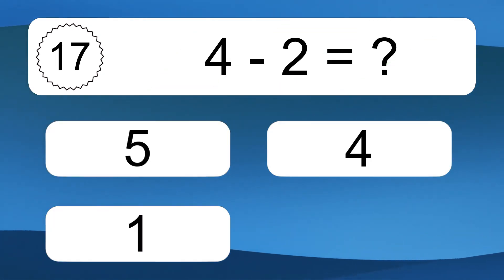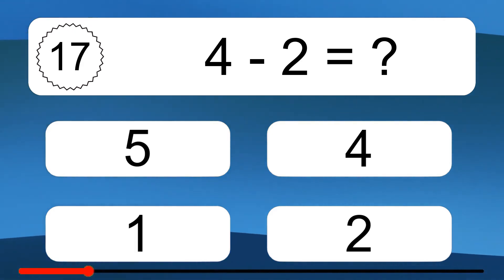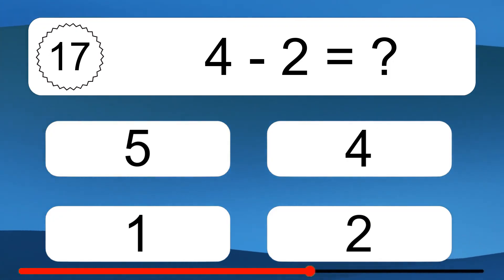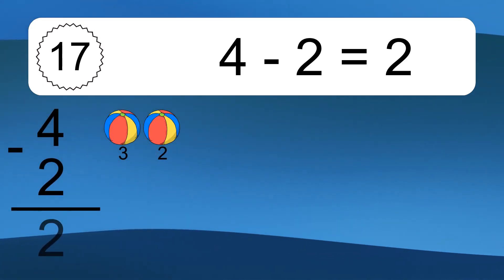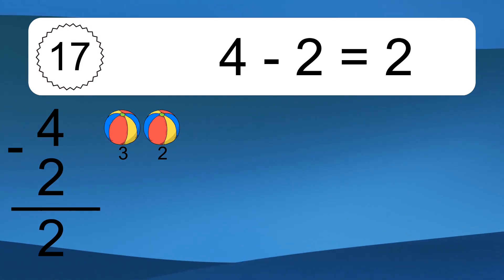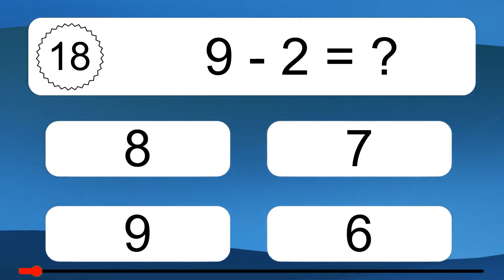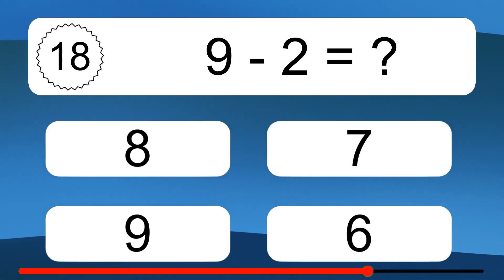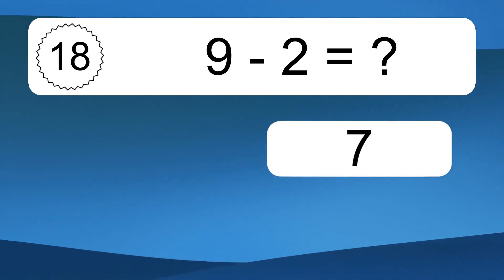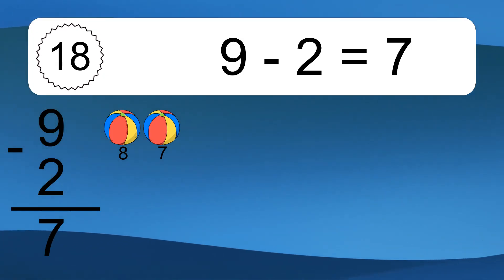4 minus 2 equals what? 4 minus 2 equals 2. Let's count it. 9 minus 2 equals what? 9 minus 2 equals 7. Let's count it: 8, 7.